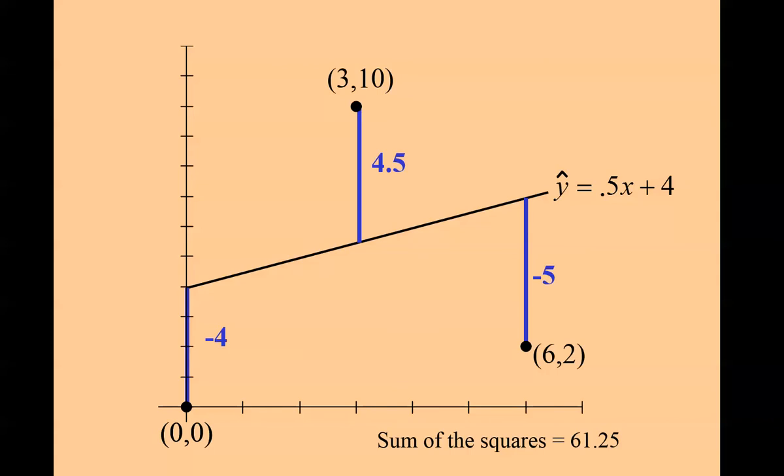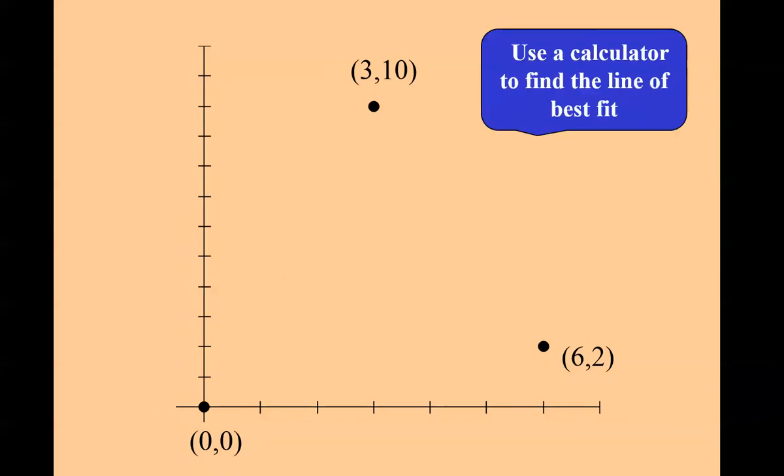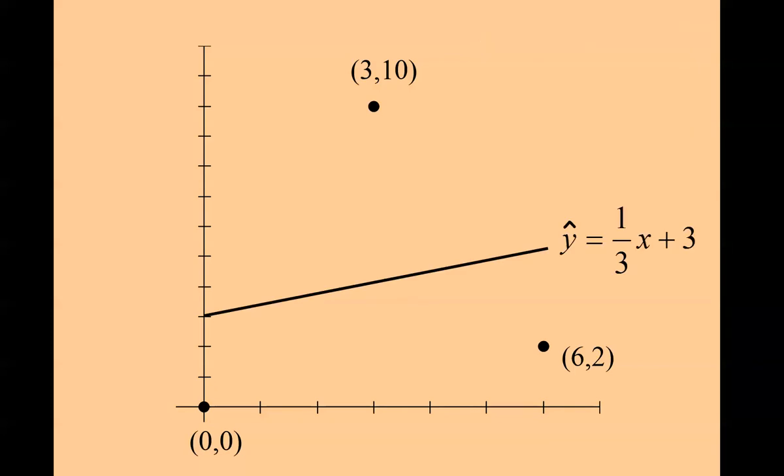When I square each of these numbers—when I square the negative 4 and square 4.5 and square negative 5—the sum of these squares is 61.25. Now let's take that in perspective with a calculator. Let's let the calculator do the line of best fit. We type the three points in and we do the linear regression screen that I was showing you with R. The calculator actually gives us this line: the 1/3 x plus 3. I notice none of the points are on the line, so there's an error for each point.